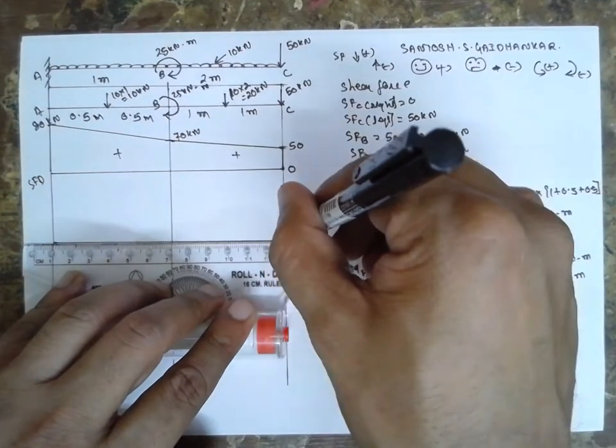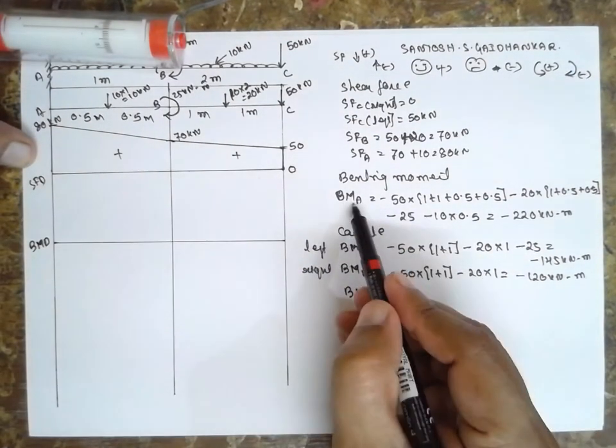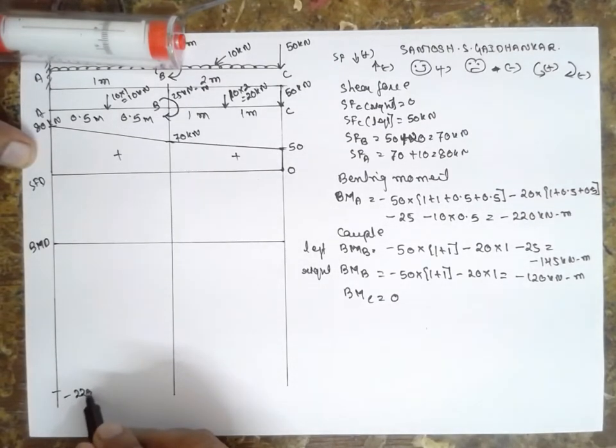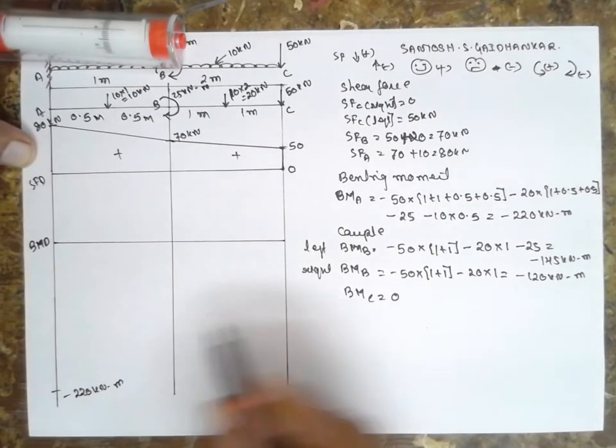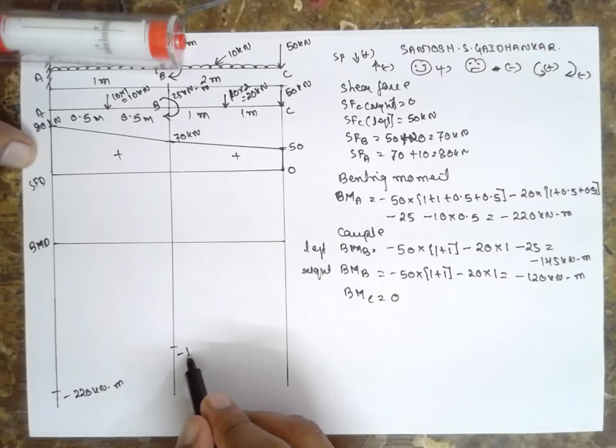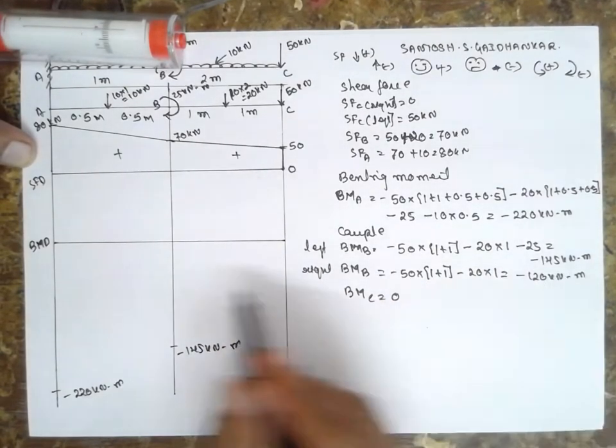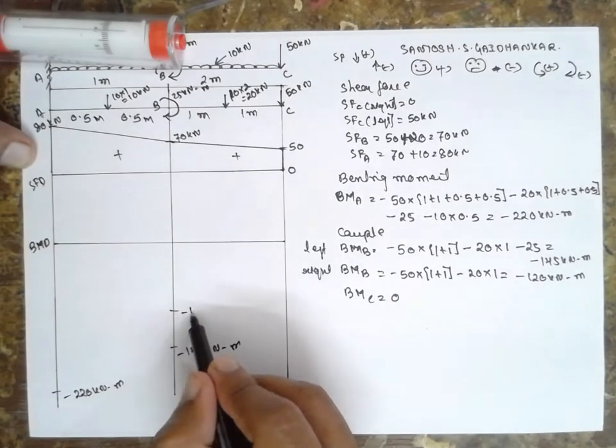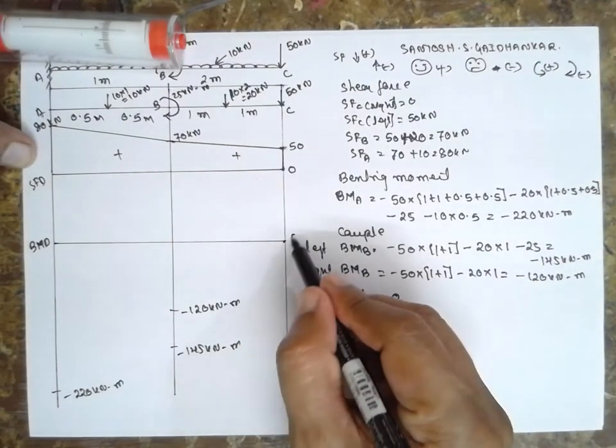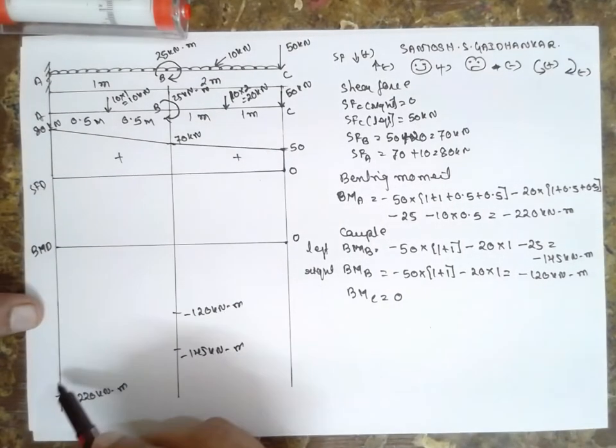Now I am drawing bending moment diagram. BMD, above is positive, below is negative. First is minus 220 kilonewton meter. There is a couple, first is 145 kilonewton meter, 120 because it has to reach towards the 0, minus 120 kilonewton meter. At B there are two values, C is 0 here. As it is UDL therefore parabola.